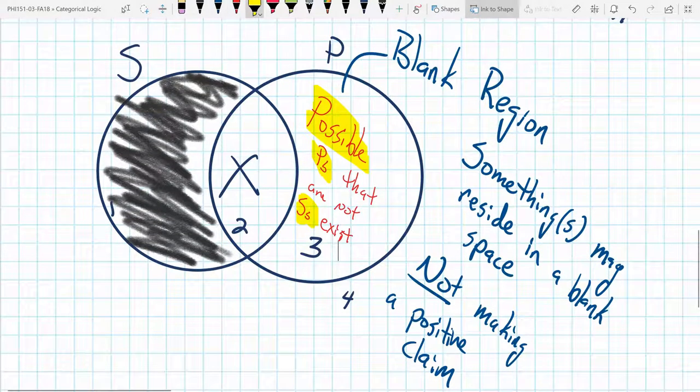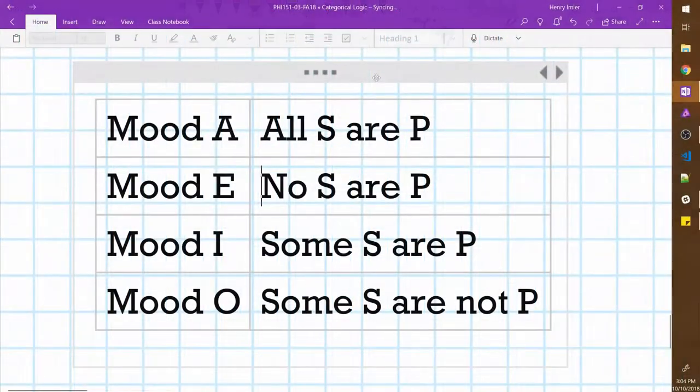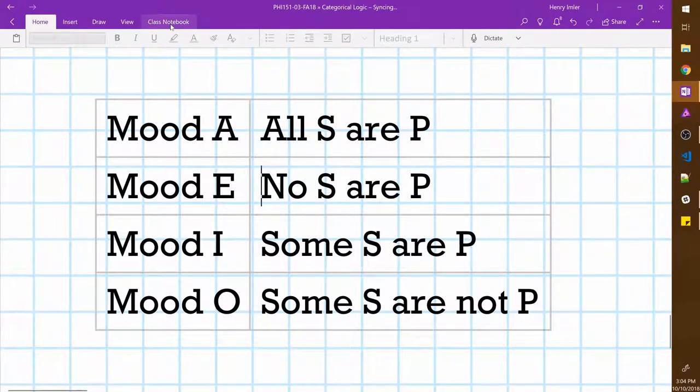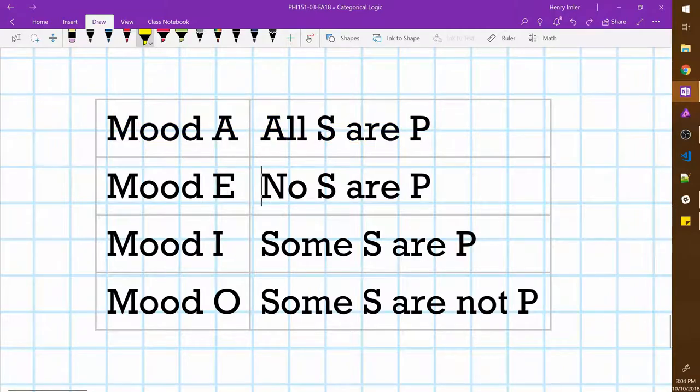So now let's talk about the four moods and Venn diagrams. These are our four mood statements. Mood A, all S are P. Mood E, no S are P. Mood I, some S are P. Then finally mood O, some S are not P.